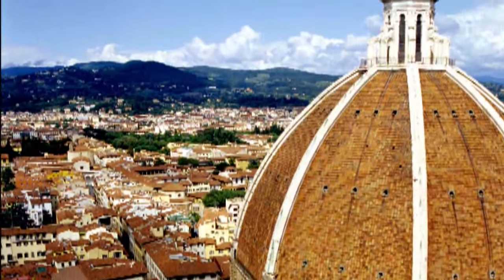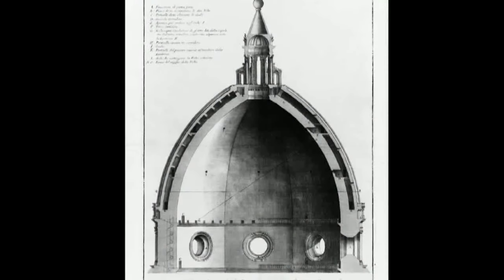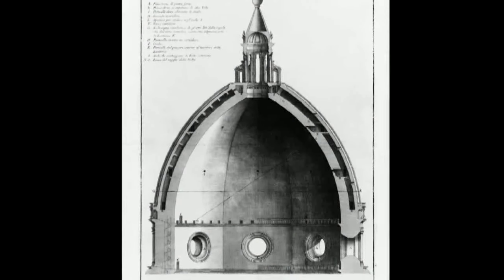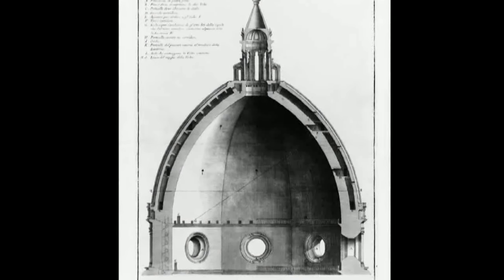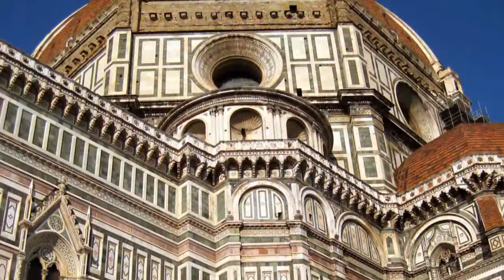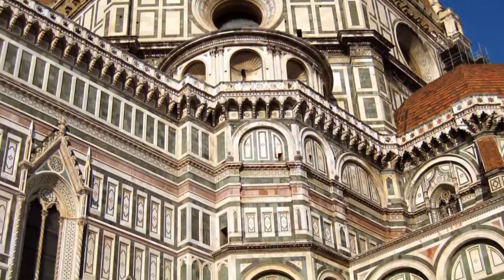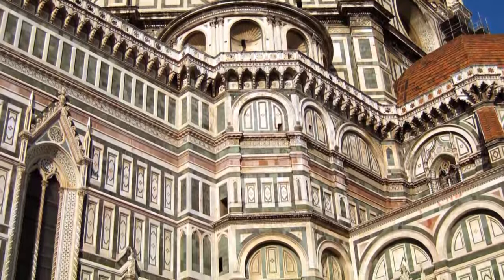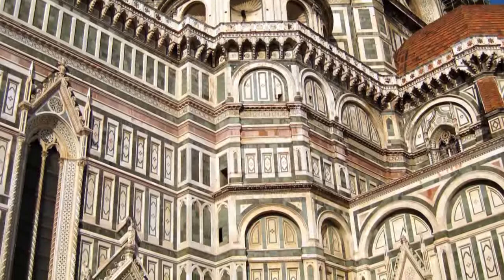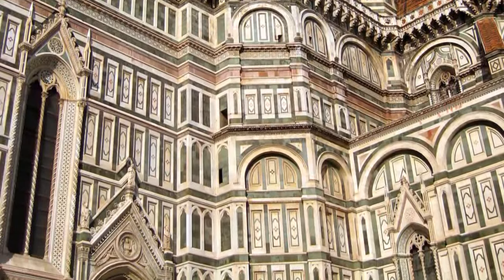Brunelleschi made the dome self-supporting, employing machines that he invented for the project, including the world's first reverse gear. He also used pillars for structural support rather than ornamentation alone, for the first time since the Romans.